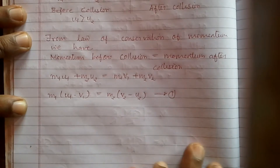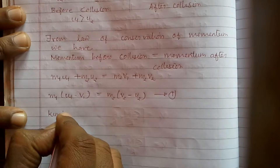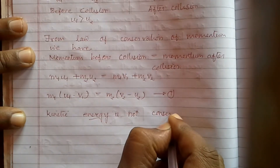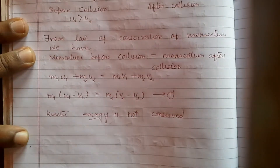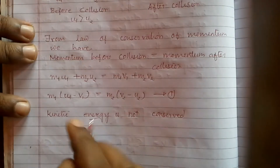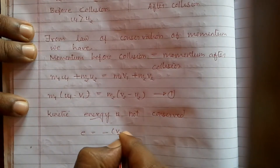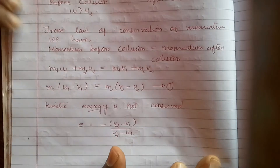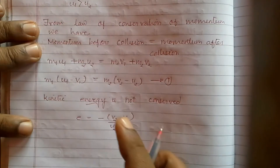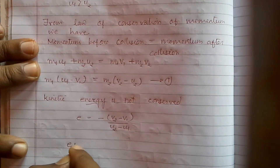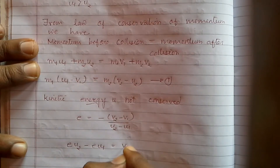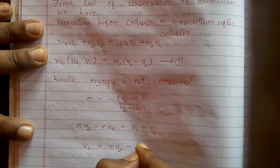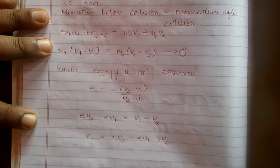Since this is an inelastic collision, kinetic energy is not conserved. So here we will take into consideration the coefficient of restitution, which we described in the previous tutorial, as e = −(v2 − v1) / (u2 − u1). This is the ratio of final relative velocity to initial relative velocity. From this we can simplify and write: e·(u2 − u1) = v1 − v2, or v1 = e·u2 − e·u1 + v2.